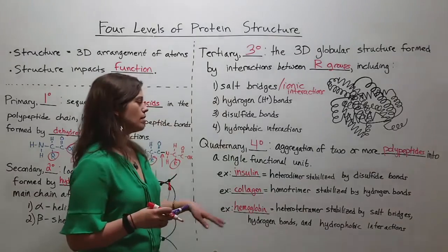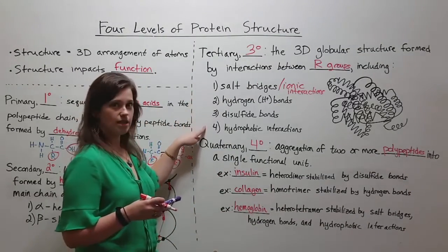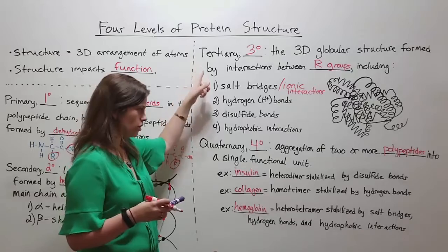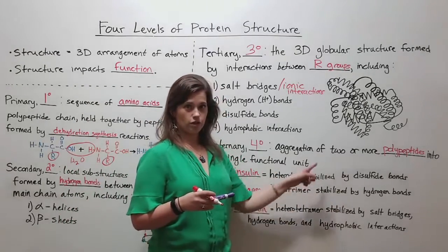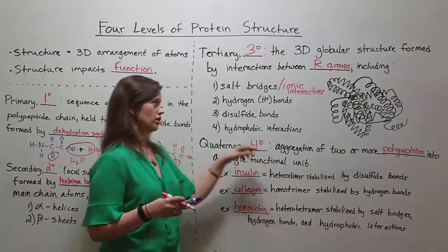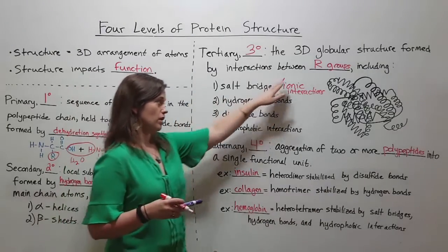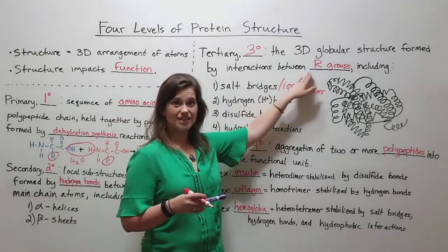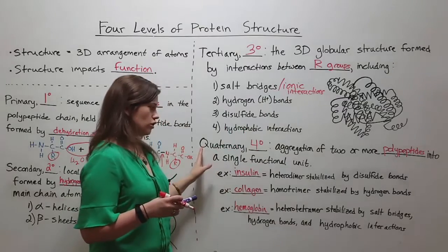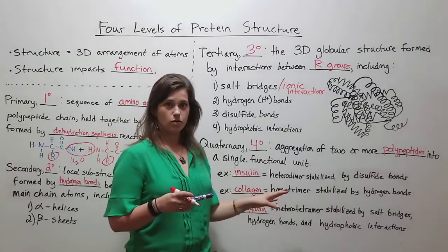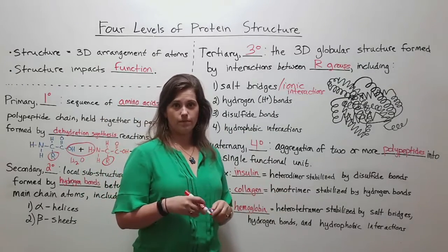Keep in mind that the same kinds of interactions that stabilize tertiary structure are useful in quaternary structure as well. It's just that in tertiary structure these interactions happen between R groups in the same polypeptide, while in quaternary structure they happen between R groups in different polypeptides.